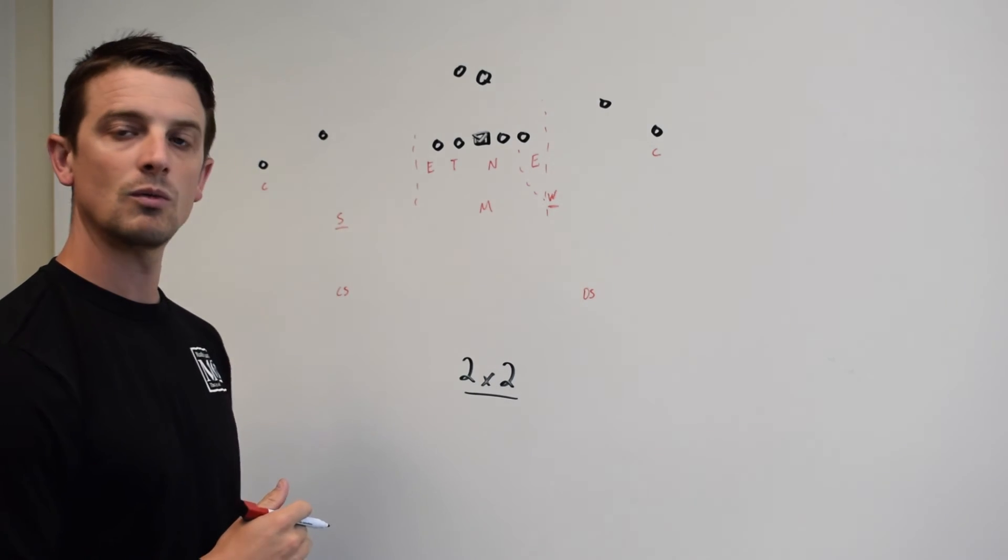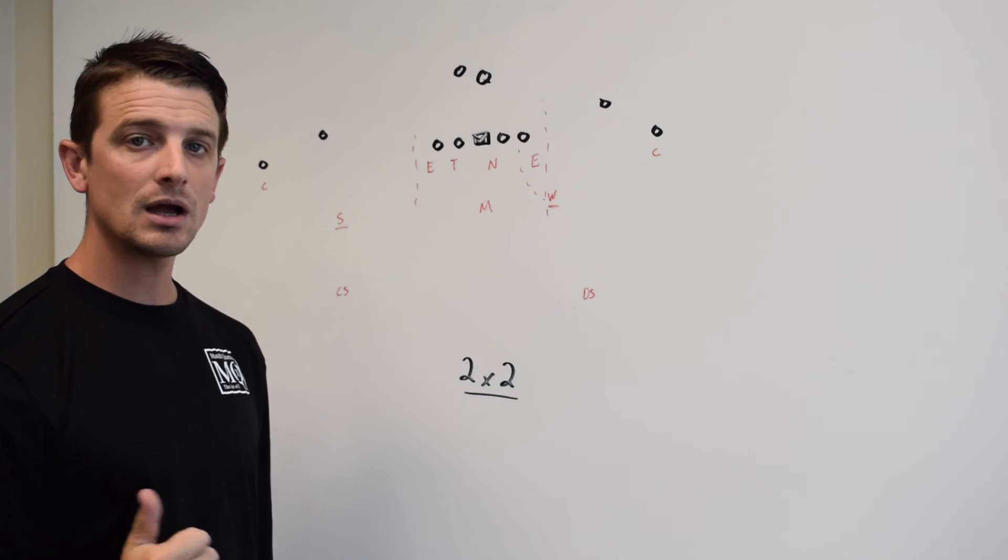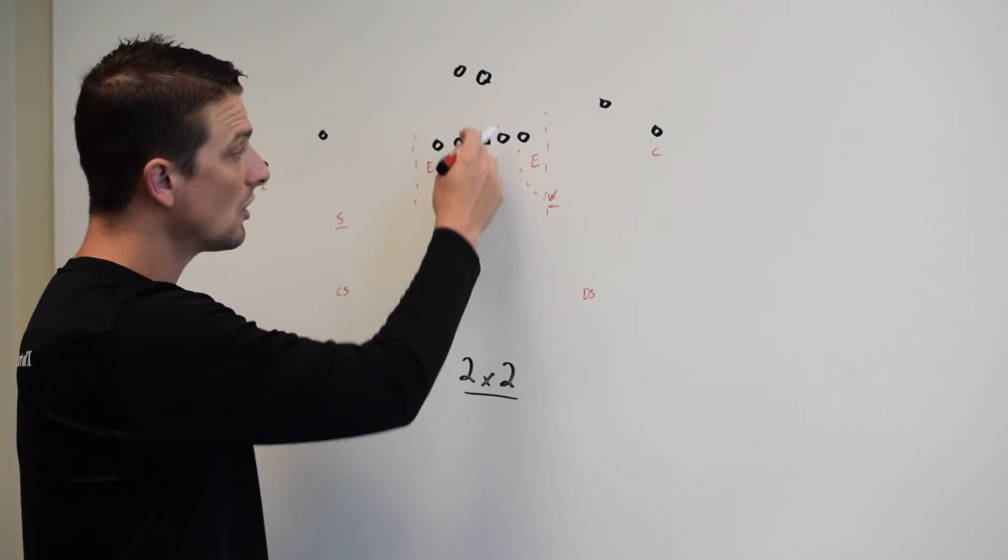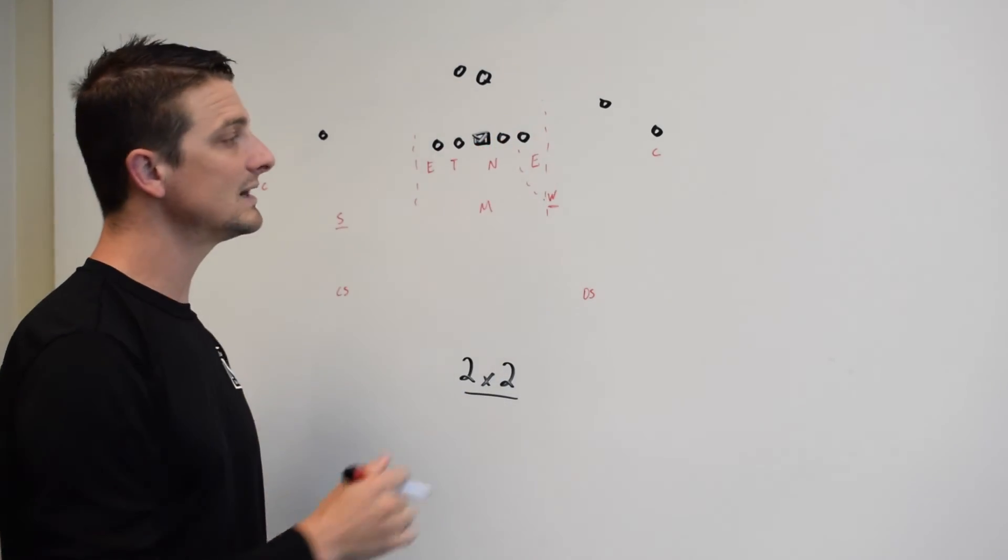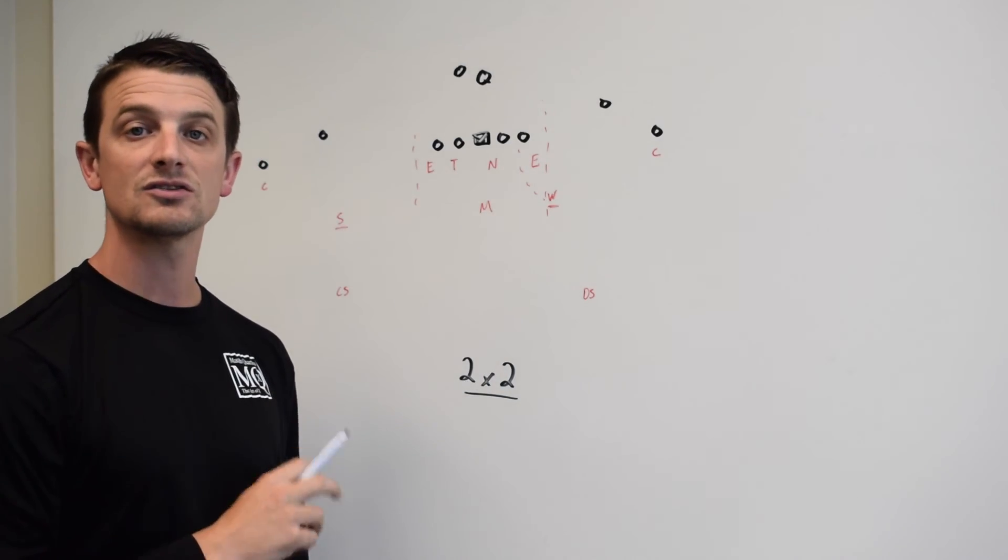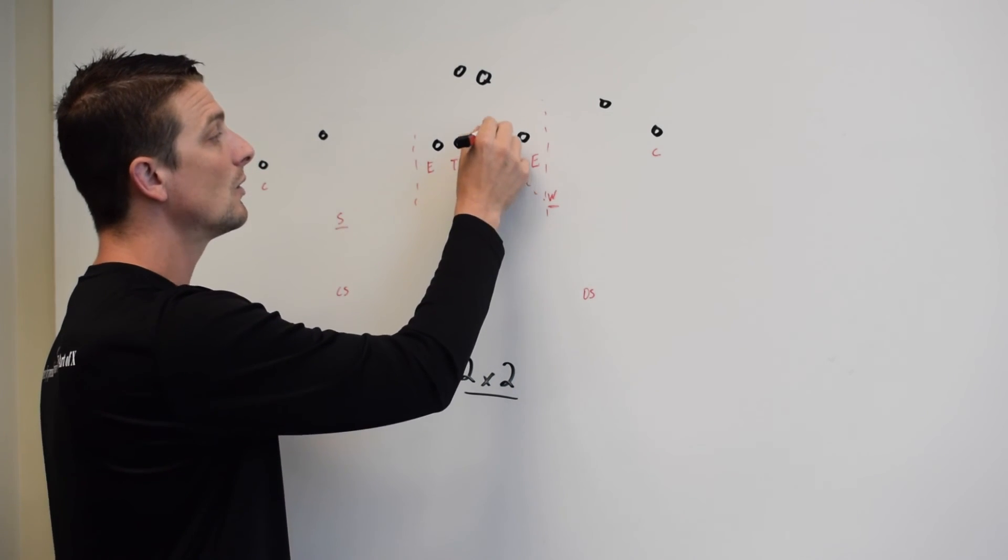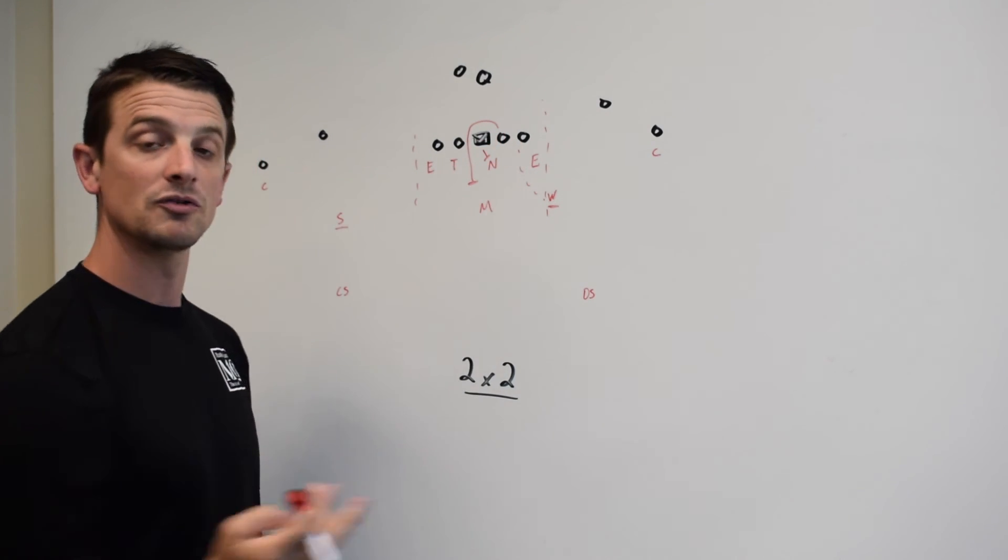Plays that you're going to see in 2x2, especially with the 4-1 box, is going to be zones. You're going to see man blocking zones, where they're going to be targeting downhill right at the Mike linebacker, making him choose a side, and then the center is going to cut him off. And you're also going to see gap schemes or fold schemes, where they're going to fold and wrap and almost make, basically, it's the spread ISO.